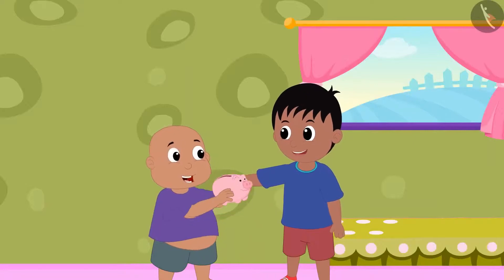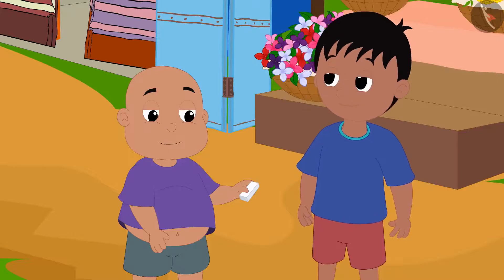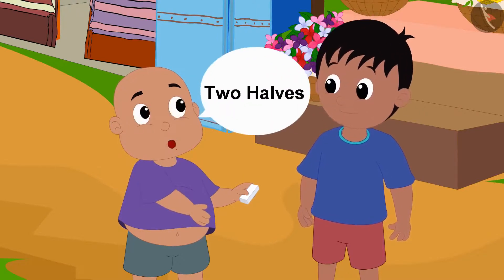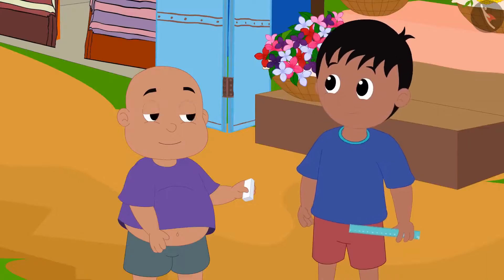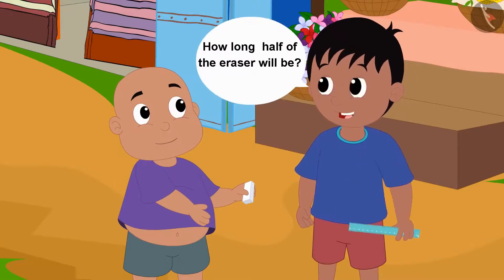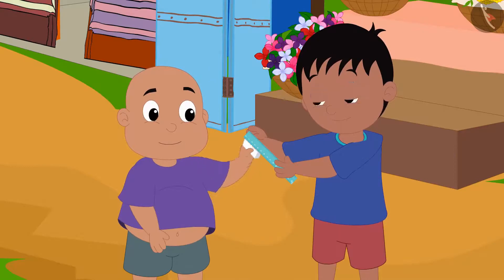Raju and Babalu collected some money and bought an eraser from the market. Raju, let us divide this eraser in two halves. Babalu said to Raju. Okay, let's measure it using a ruler so that we know how long half of the eraser will be.